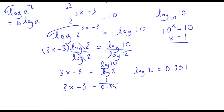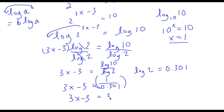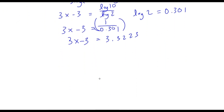So now we have 3x minus 3 equals 1 over 0.301, which is approximately 3.3223.